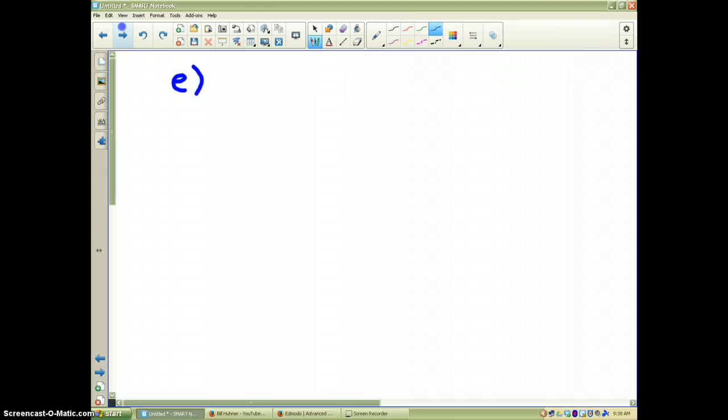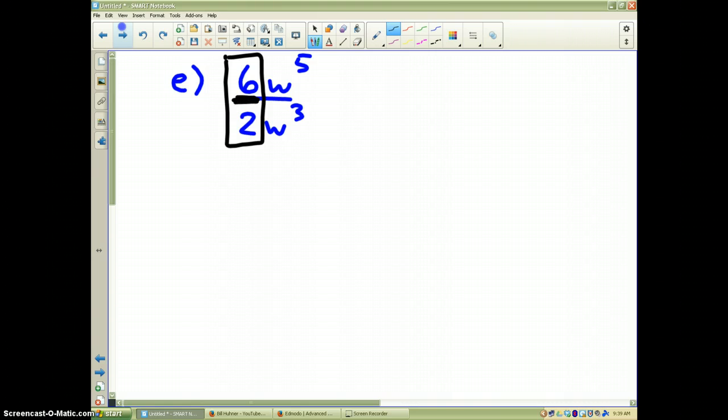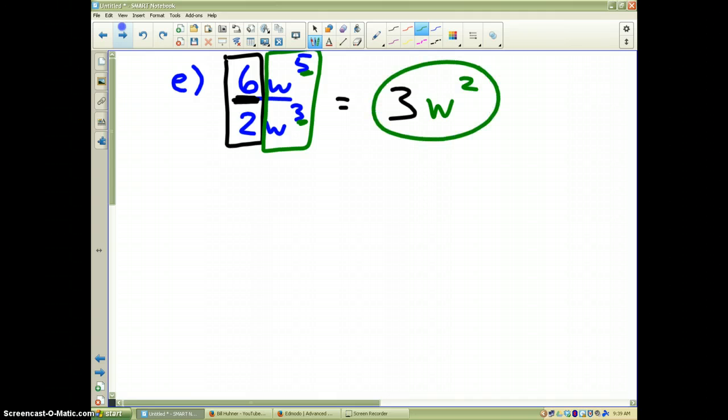Example number 5. Let's do 6w to the fifth divided by 2w to the third. Once again, let's keep in mind that these two numbers are not exponents. They are normal numbers. In the black box, it says 6 divided by 2. That's 3. Now, in the green box, I have exponents. W to the fifth divided by w to the third. Take the powers. 5 minus 3. That means we should have w squared as our variable. And that is the simplification of this particular problem.